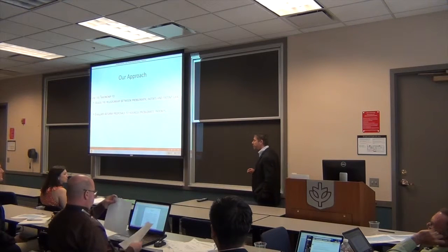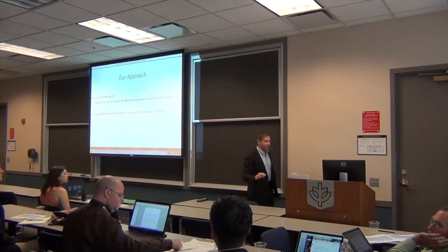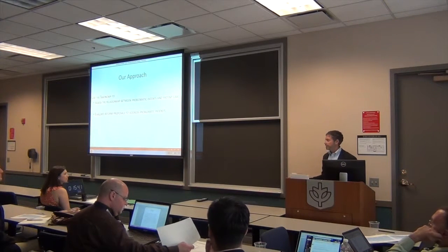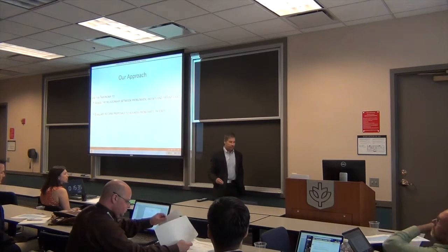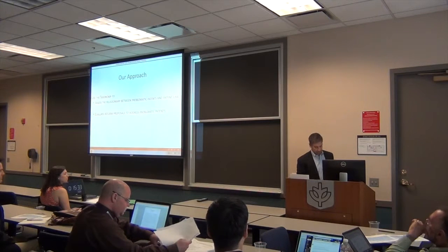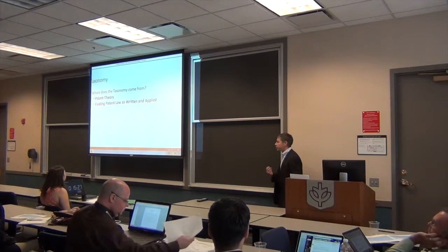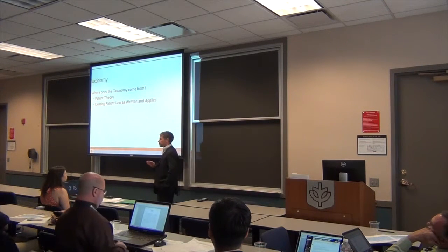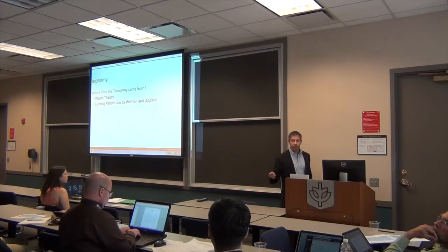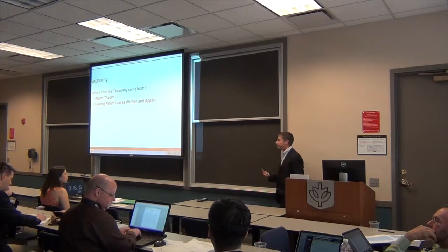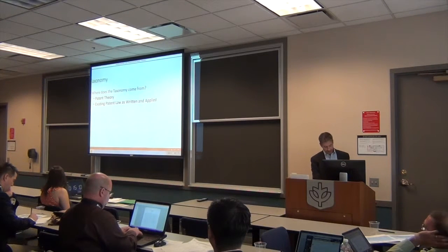We can also examine the relationship between existing patents and existing law, and the degree to which there's a mismatch or alignment with law. And we think it can be more helpful in evaluating patent reform proposals as well. If we're trying to generate a robust taxonomy about the dimensions along which patents can be problematic or not, where does it come from? The answer is primarily patent theory and secondarily patent law as it is written and currently applied.